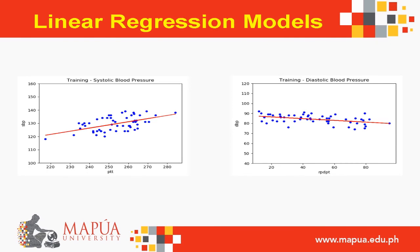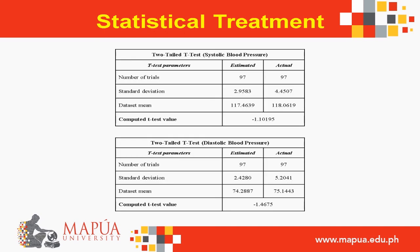This slide shows the correlation and linear regression model generated as a result of the training conducted in the algorithm and the subsequent statistical treatment. For PTT, the correlation is positive, so as PTT rises, the computed systolic blood pressure rises. For RPDPT, the correlation is negative, so if RPDPT rises, then the diastolic blood pressure actually decreases.